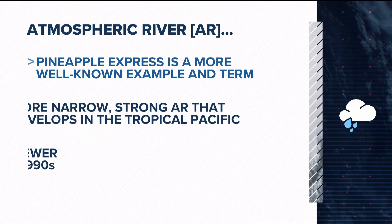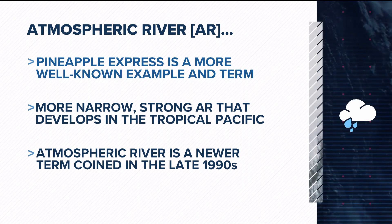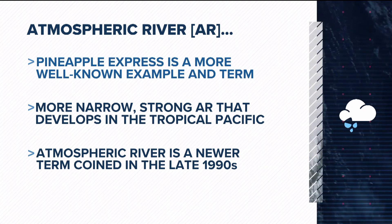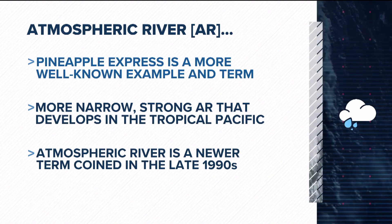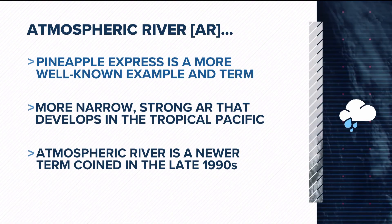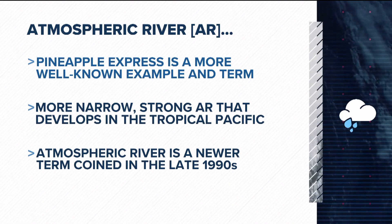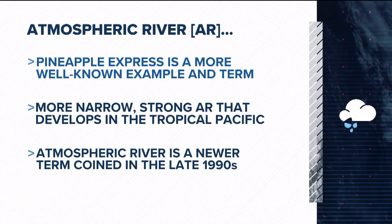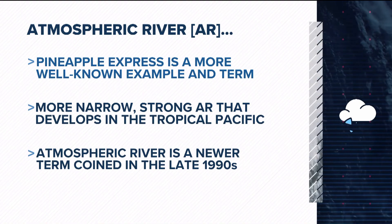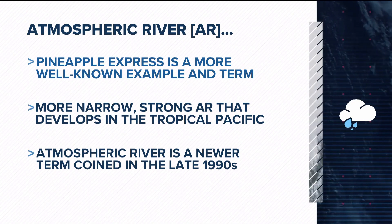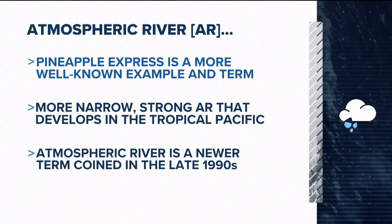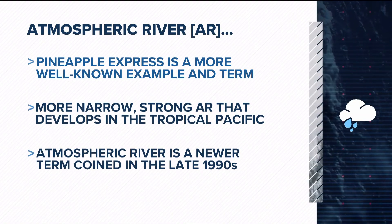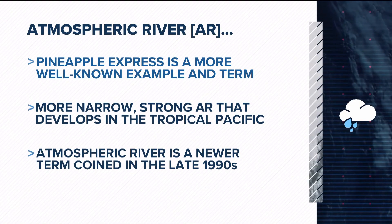The term atmospheric river — and a good example many people know — is the Pineapple Express. It's a more well-known example and term for an atmospheric river. The difference is that the Pineapple Express tends to be a little more narrow; it's a strong atmospheric river that develops in the tropical Pacific. Atmospheric river is actually a newer term, coined in the late 1990s.